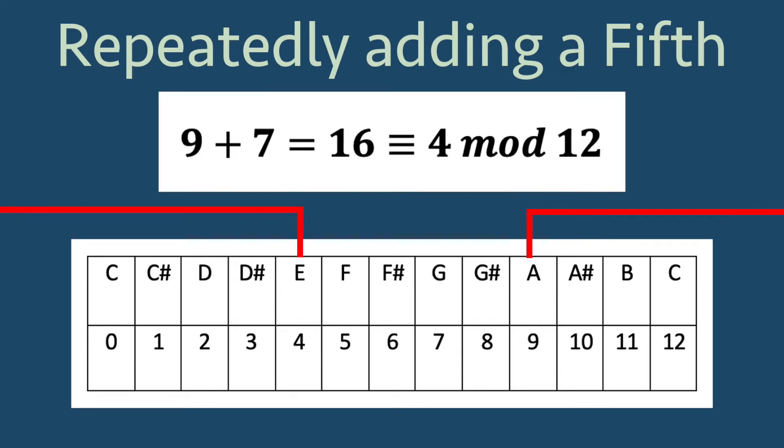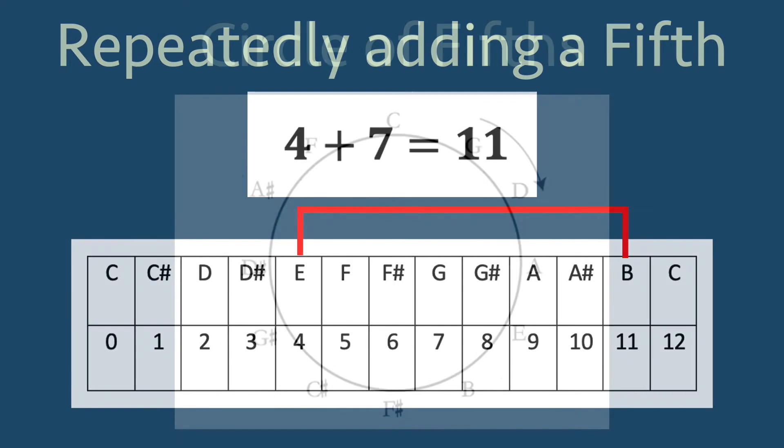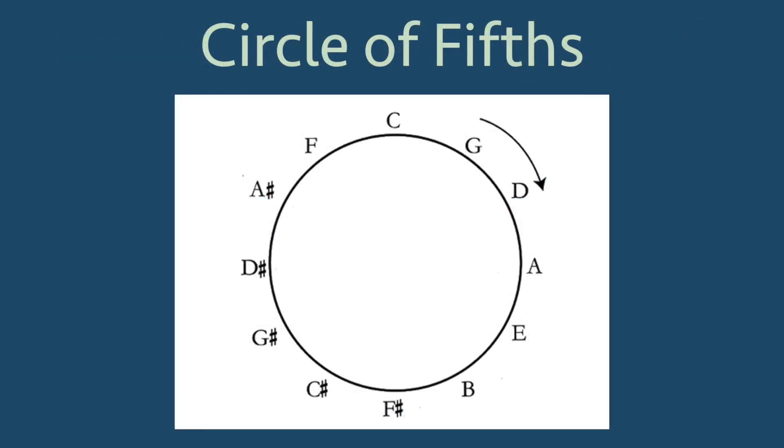Continuing with this pattern, we obtain what is called the circle of fifths, which we can see in this image by starting at C at the top and going around clockwise. We can hear this on a piano, by starting at the lowest C, and then ending at the highest C.